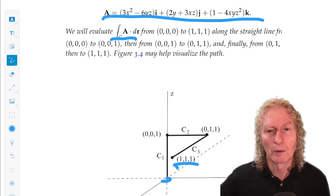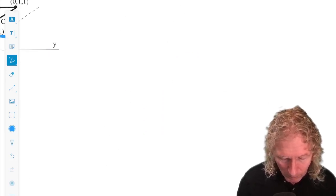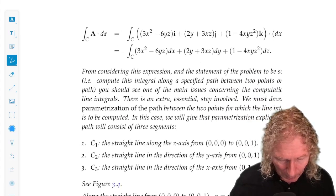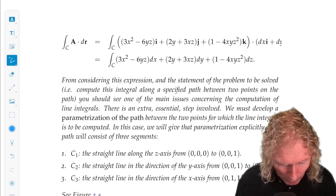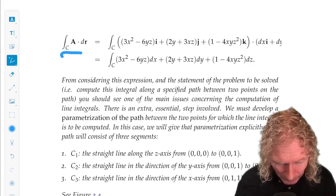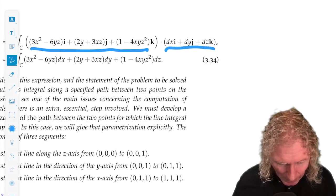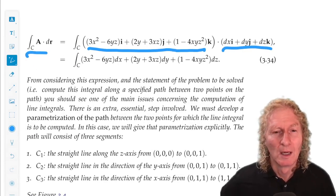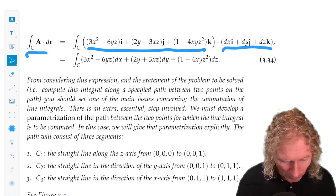The nice thing about integrals is that they're additive. So we can compute along each path and add them up. So let's first of all write out A dot dr. So this is A dot dr. And now we'll use the fact that ijk are unit length and mutually orthogonal. And we get this expression.